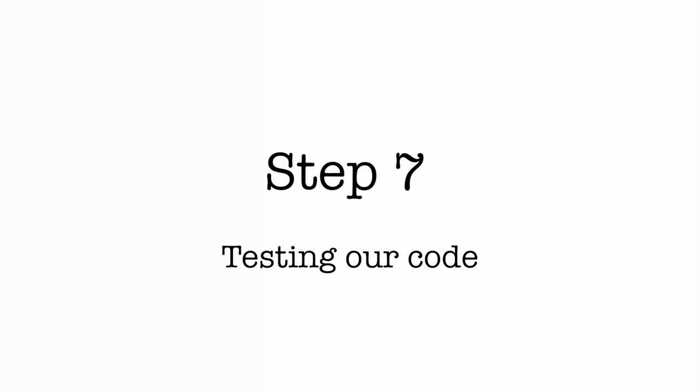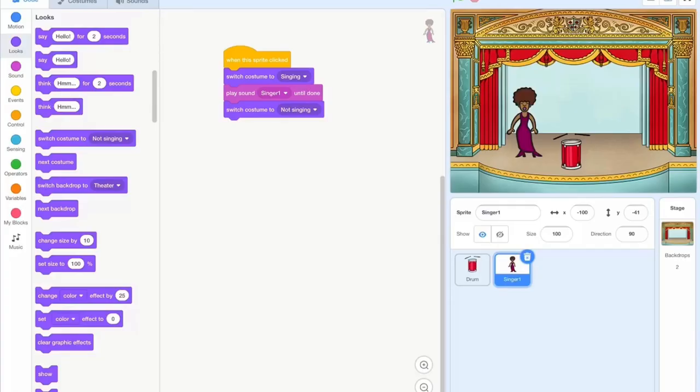Step 7: testing our code. What happens when you click on your singer and your drum? Can you see your singer's costume change? Can you hear her sing? And what happens when you click the drum — can you hear it play?